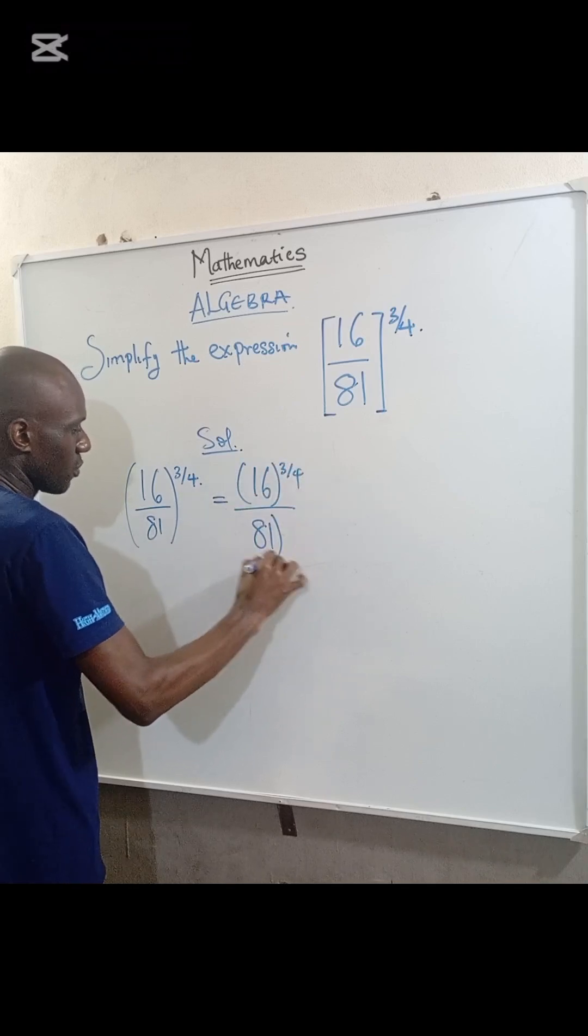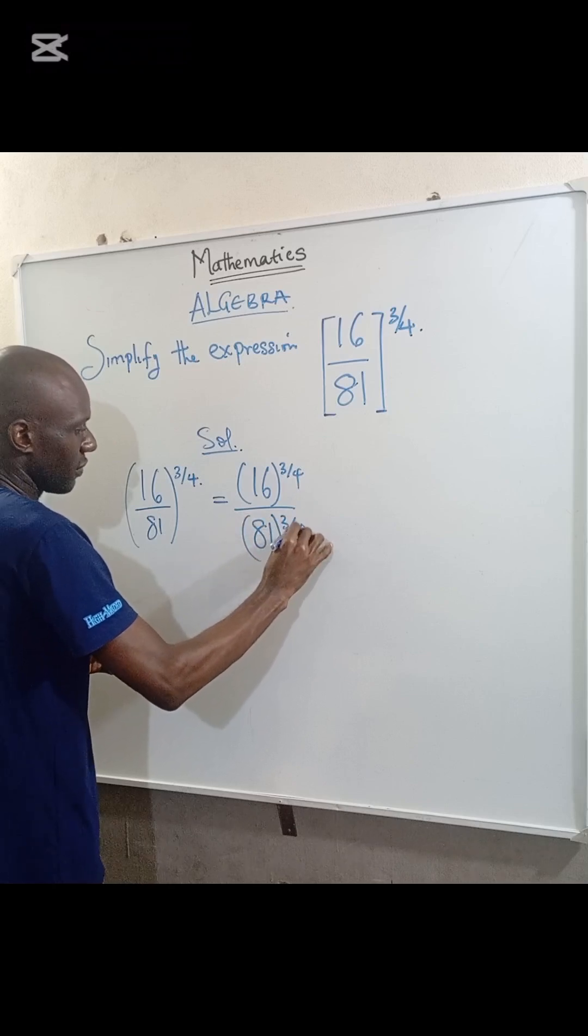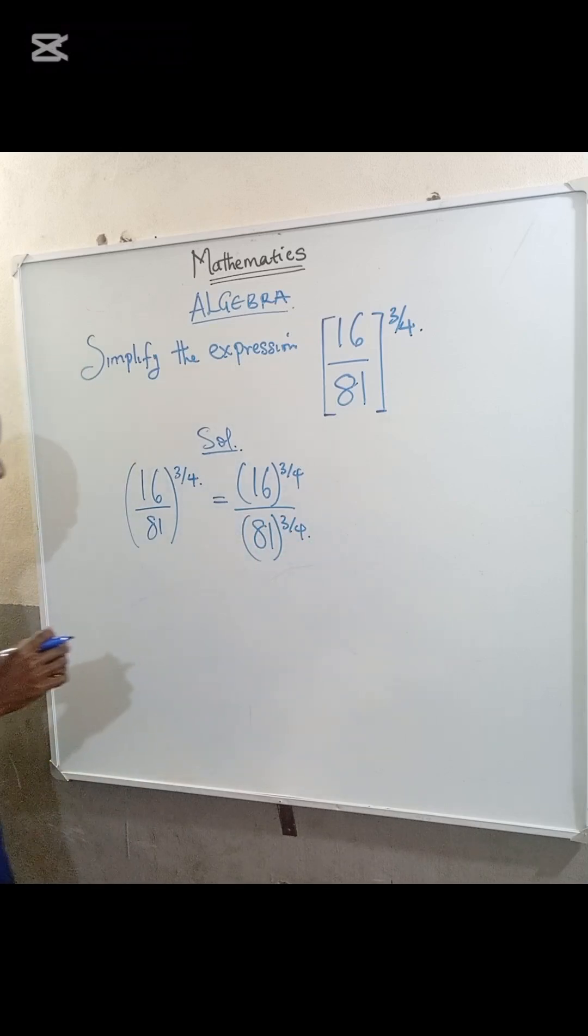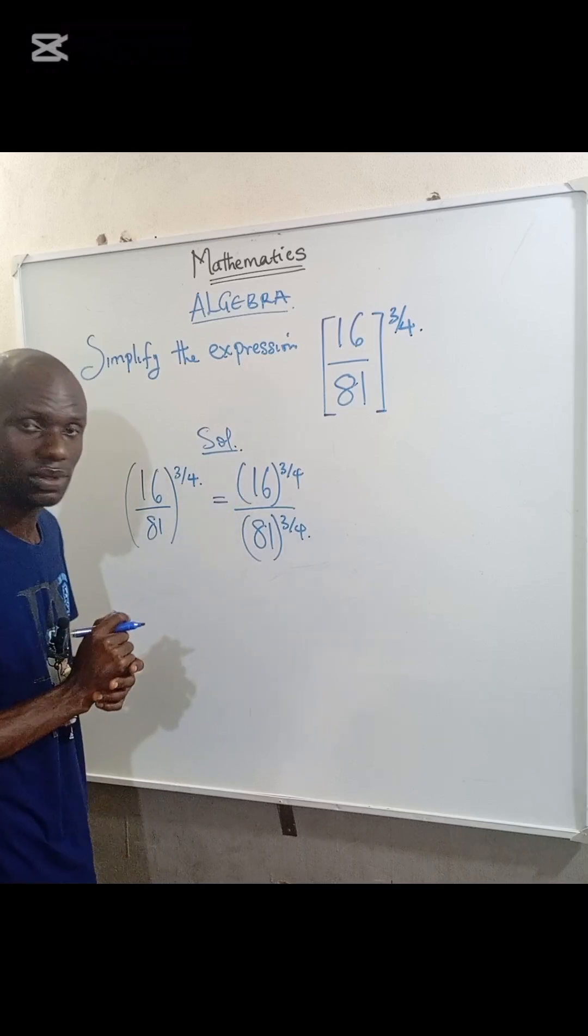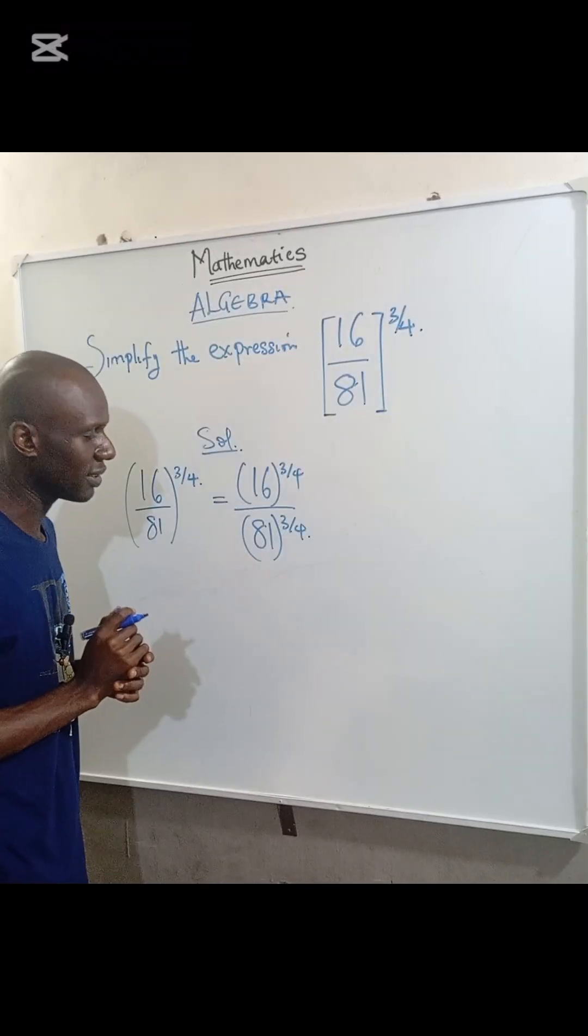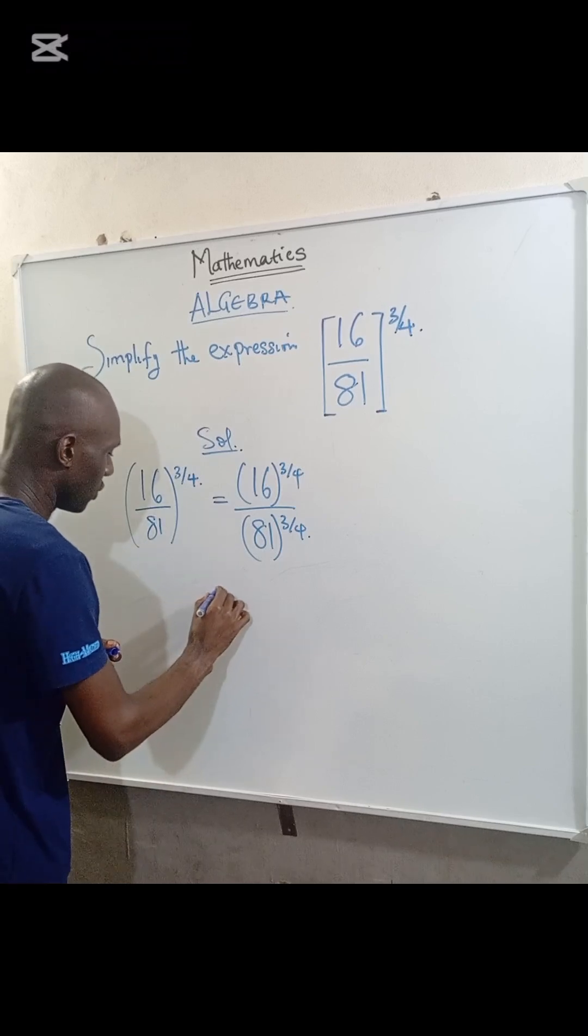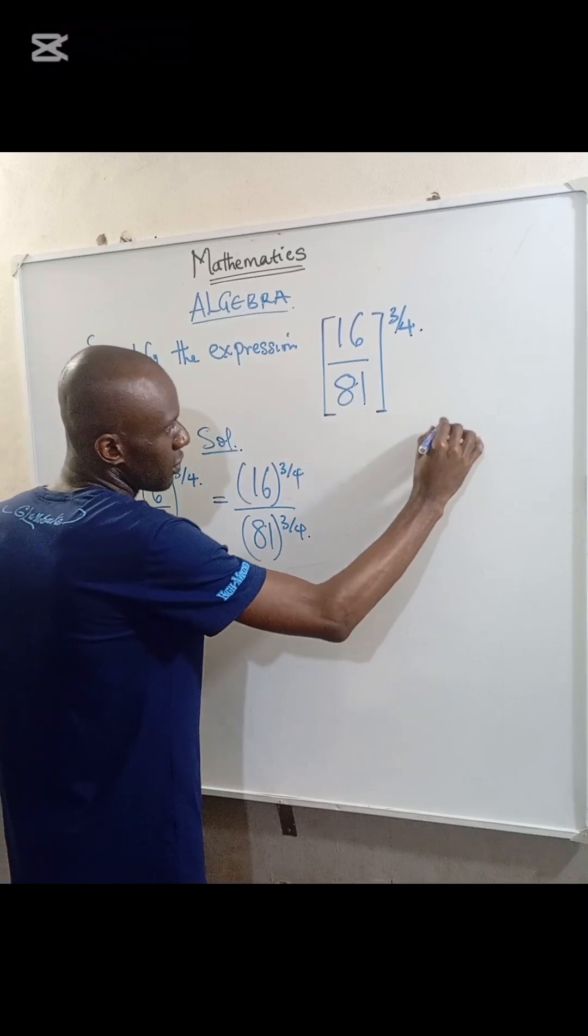Then we can express 16 in the form of base 2 and express 81 in the form of base 3. Recall that 2 to the power of 4 equals 16, and 3 to the power of 4 equals 81.